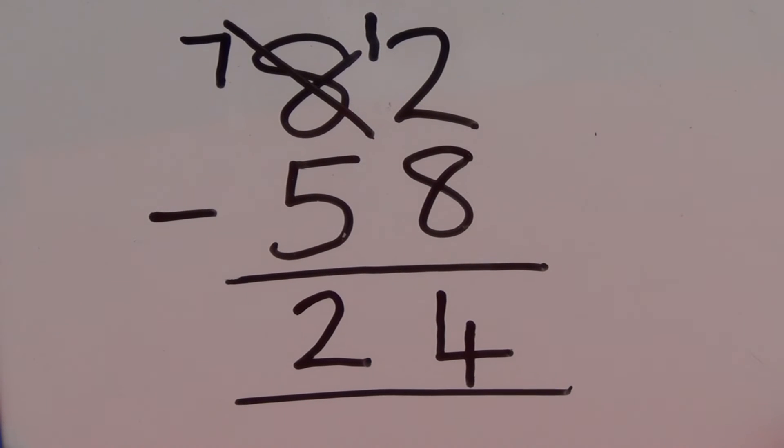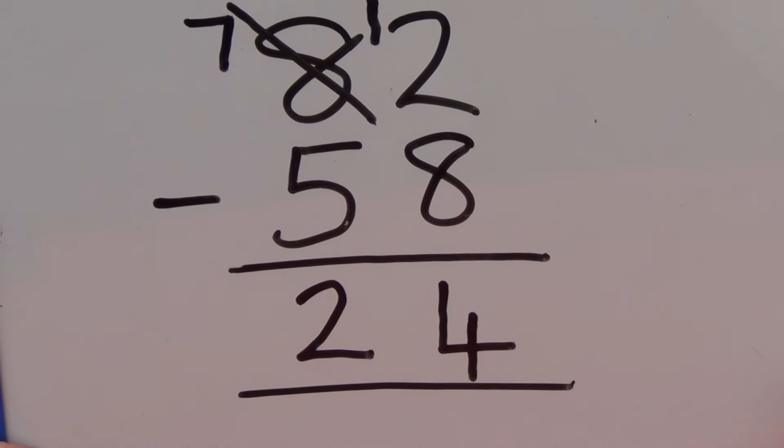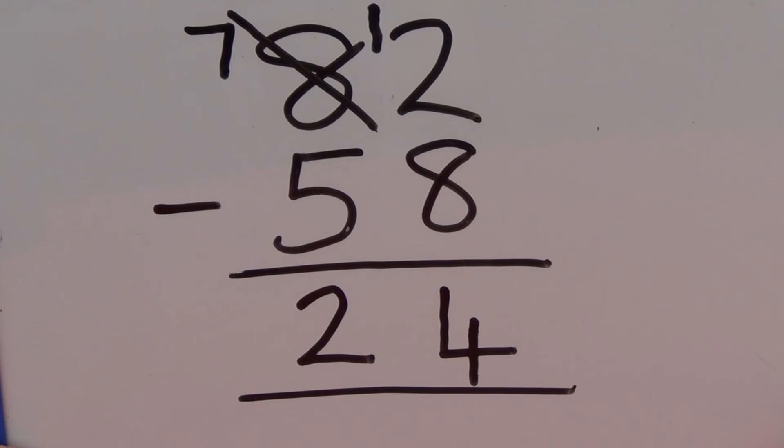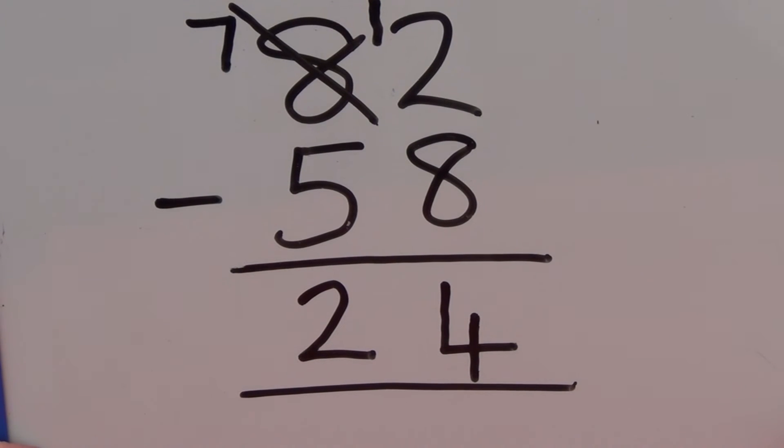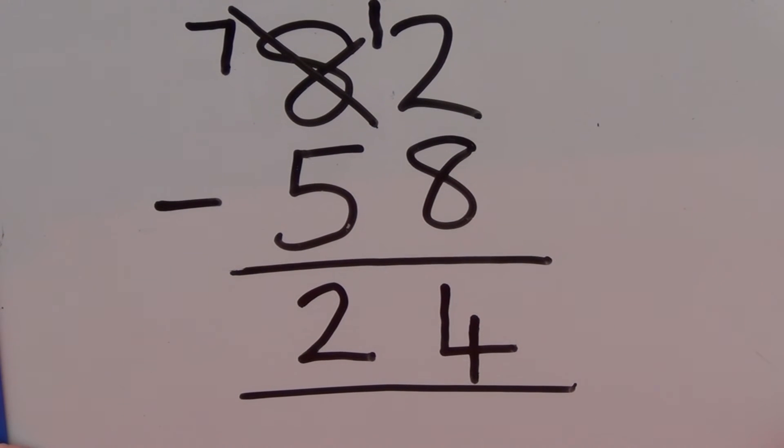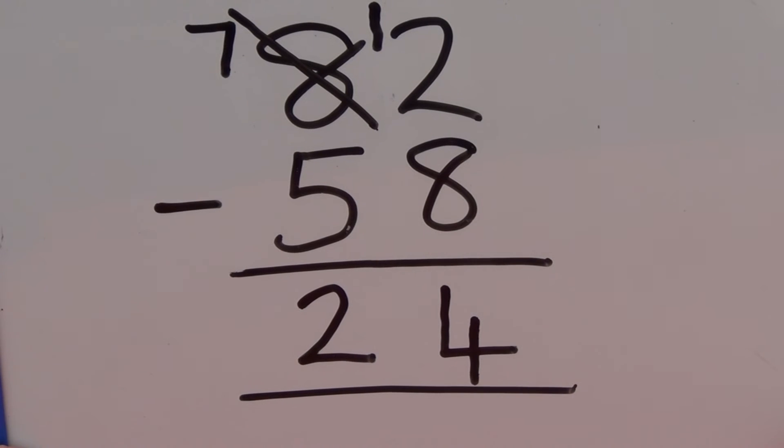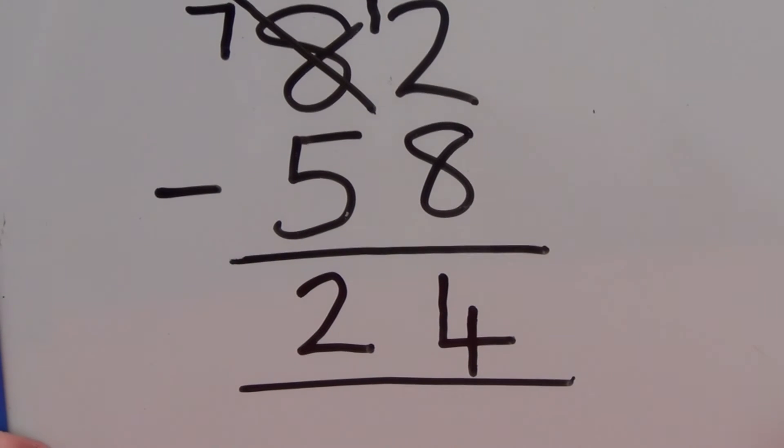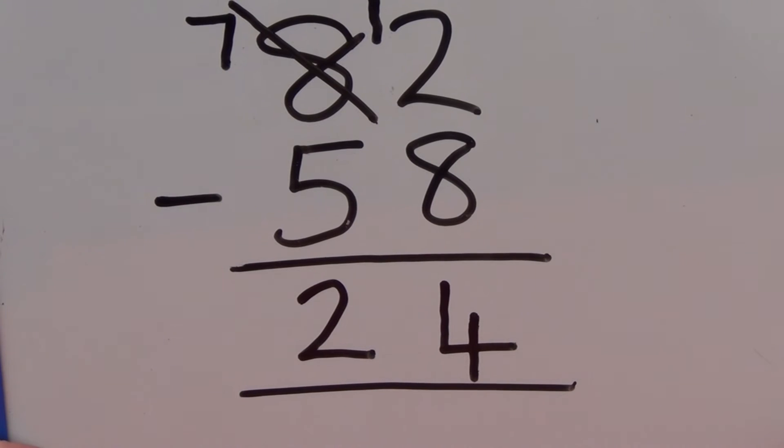We can show this as column method without the straws. When you exchange a 10 for 10 ones you cross out the number of tens and write how many tens there are now. So there were 8 tens but when we exchanged a 10 we were left with 7.